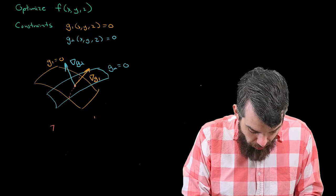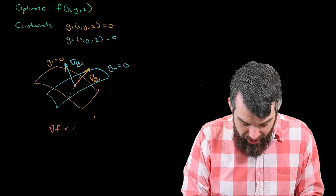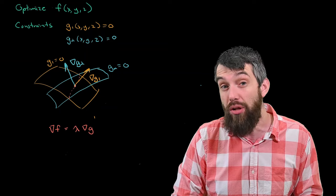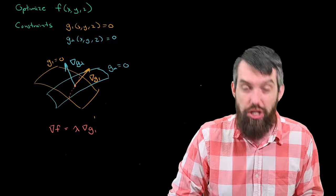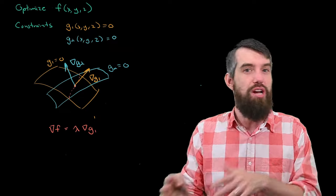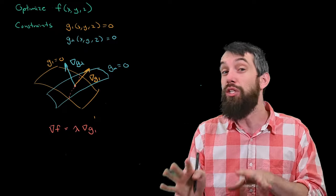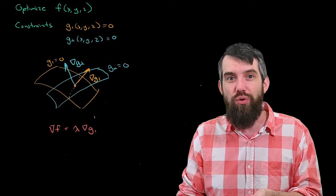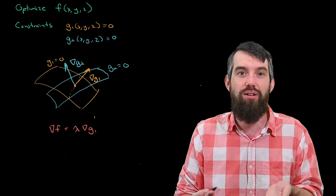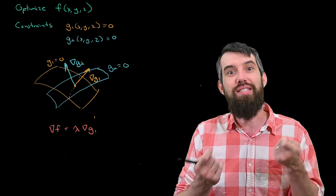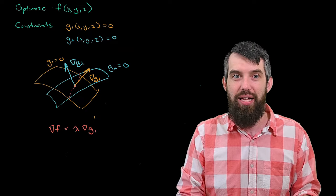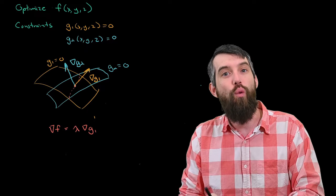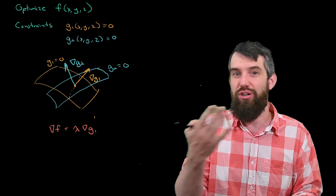I could have another normal vector — the gradient of g2. Now I want to find a way to write down the Lagrange multiplier equation. For a single constraint, we say that the gradient of f equals lambda times the gradient of g1. In the two-constraint case, the gradient of g1 and the gradient of g2 generally form a plane — all linear combinations of those two gradient vectors.